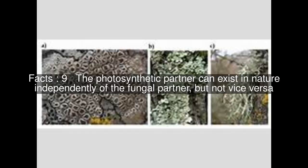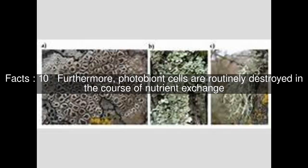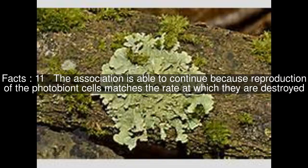The photosynthetic partner can exist in nature independently of the fungal partner, but not vice versa. Furthermore, photobiont cells are routinely destroyed in the course of nutrient exchange. The association is able to continue because reproduction of the photobiont cells matches the rate at which they are destroyed.